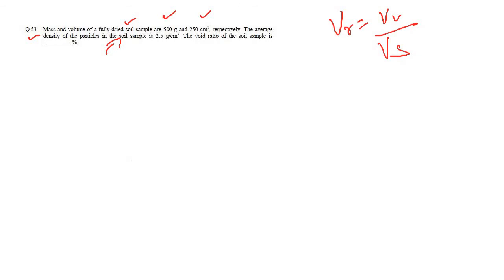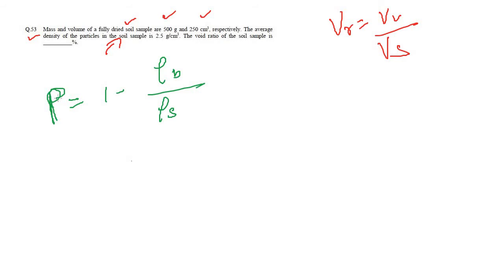We need to find the volume of voids and the volume of solids. For volume of voids we can get it from porosity. From porosity we can get the volume of voids because porosity is the volume occupied by the pore space or the void space. We need to find out the porosity using the formula: porosity = 1 − (density of bulk / density of solids).